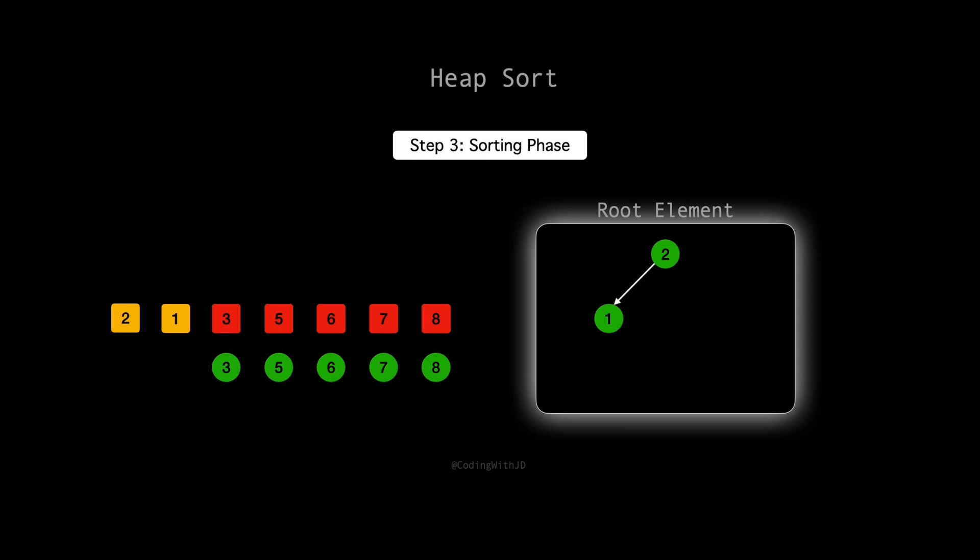With the heap 2, 1 confirmed as a max heap, the last step in our sort process is to swap 2 with 1 to finalize the sorting. Our array is now completely sorted, represented as 1, 2, 3, 5, 6, 7, 8. Heapsort has successfully arranged our elements in ascending order.